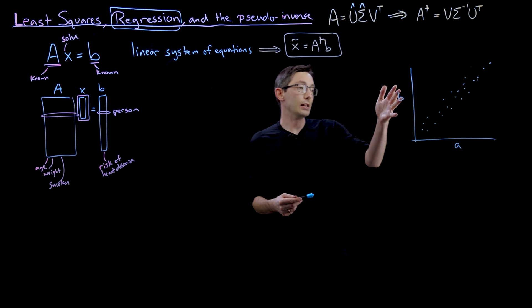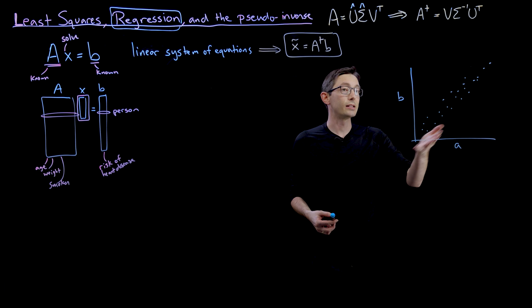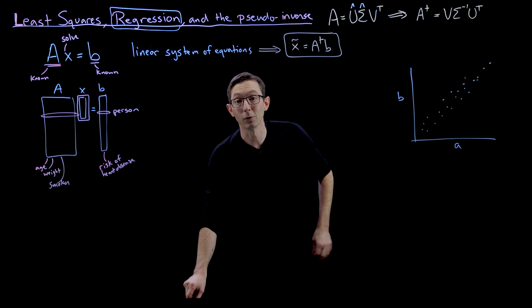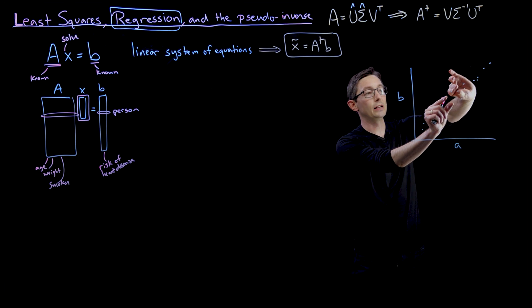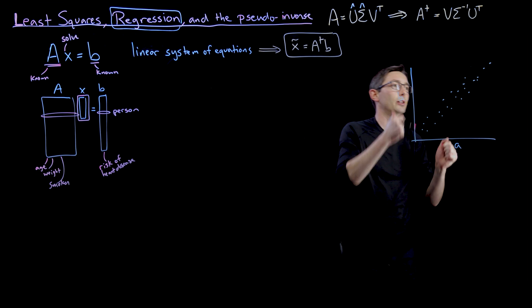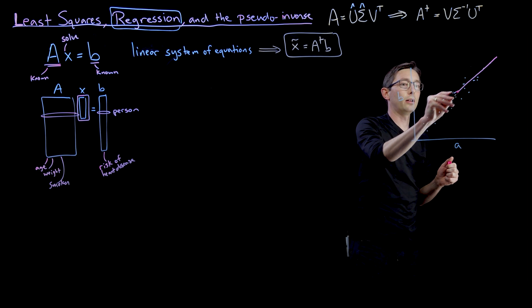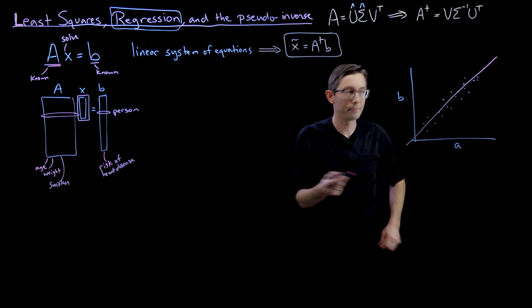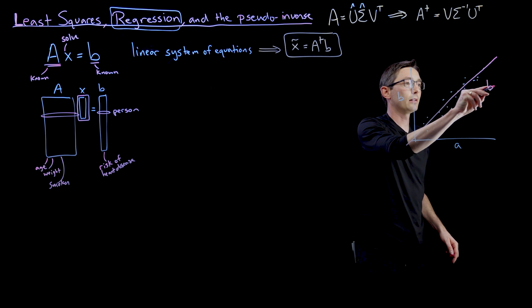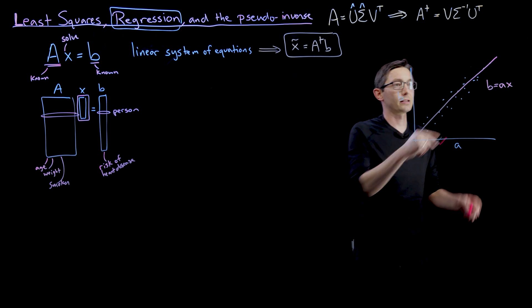So if I asked you, does A predict B, you would say it looks pretty good. It looks roughly linear. There's pretty low spread in this direction. And you could eyeball a best fit line like this, where B equals A times X.